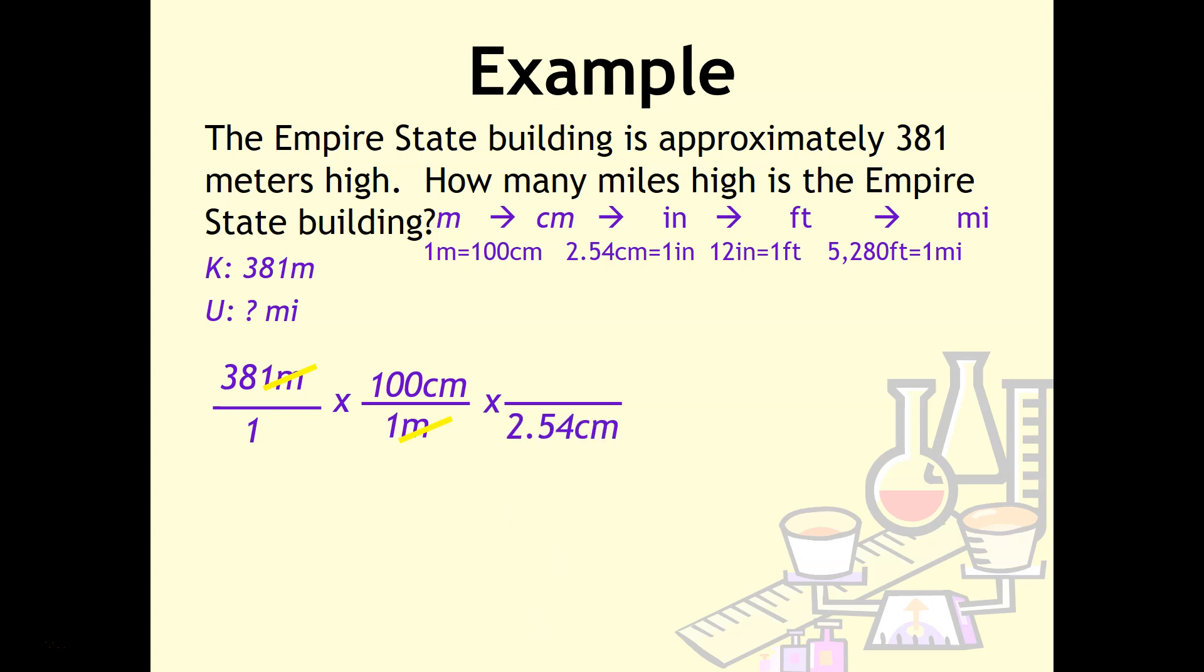We have to get meters on bottom, so it'll be one meter to 100 centimeters. Then 2.54 centimeters to one inch, then 12 inches equals one foot, and then 5,280 feet equals one mile. Be careful here. Make sure you multiply by everything on top: 381 times 100 times one. Then hit division sign 2.54, division sign 12, and division sign 5,280. You should get 0.237 miles.